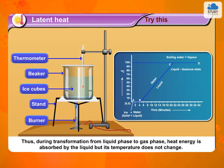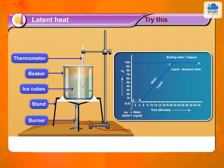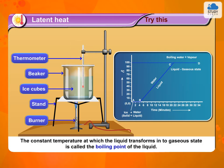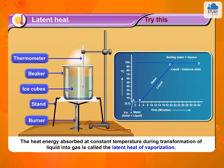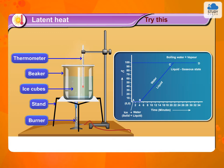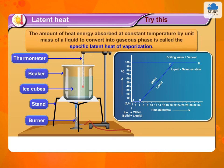During transformation from liquid phase to gas phase, heat energy is absorbed by the liquid but its temperature does not change. The constant temperature at which the liquid transforms into gaseous state is called the boiling point of the liquid. The heat energy absorbed at constant temperature during transformation of liquid into gas is called the latent heat of vaporization. The amount of heat energy absorbed at constant temperature by unit mass of a liquid to convert into gaseous phase is called the specific latent heat of vaporization.